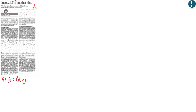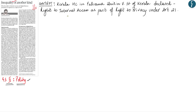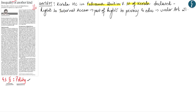This news appears on page number 11 and reads 'Inequality of Another Kind.' The author is trying to put forward a case as to why the right to internet access as well as digital literacy should be recognized as an independent right. This discussion will become relevant from the perspective of GS Paper 2 under the category of polity, especially those concerning Fundamental Rights and the DPSP. The context is that recently in the case of Fahima Shirin versus the State of Kerala, the Kerala High Court declared that the right to internet access is a fundamental right.